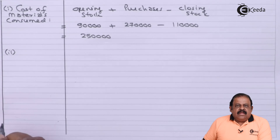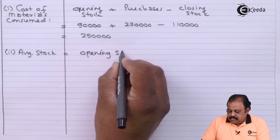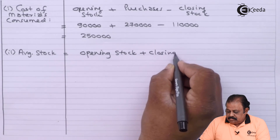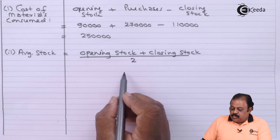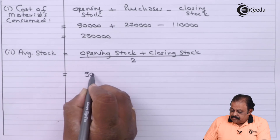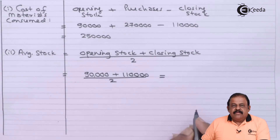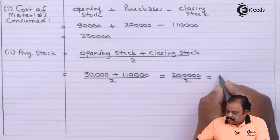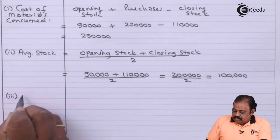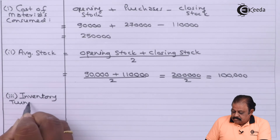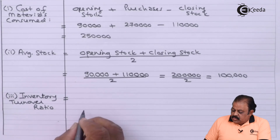Next, we are required to find out average stock. The formula is: opening stock plus closing stock divided by 2. Opening stock is 90,000 and closing stock is 1,10,000, divided by 2. So, average stock is 1,00,000.